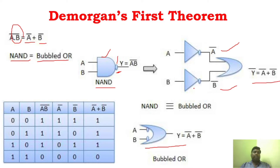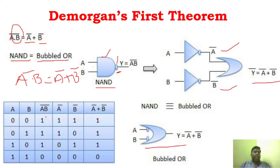Now for the proof of this theorem, we have to prove that A·B whole bar is equal to Ā + B̄. Consider the inputs: 0,0 — 0,1 — 1,0 — 1,1. First, determine A·B: 0 into 0 is 0, 0 into 1 is 0, 1 into 0 is 0, and 1 into 1 is 1. So A·B is 0, 0, 0, 1.